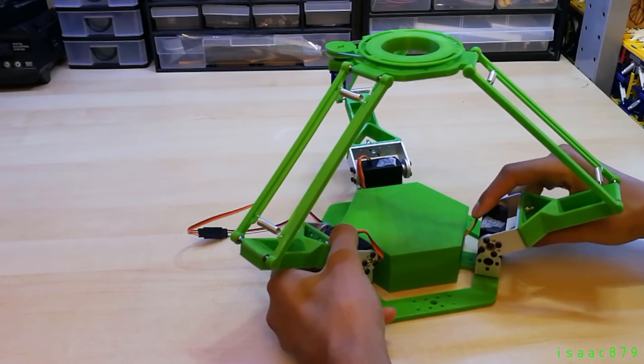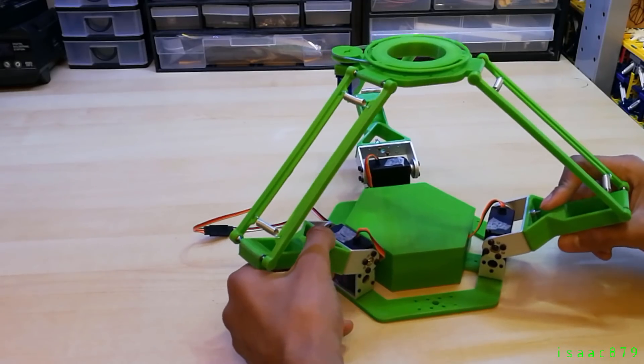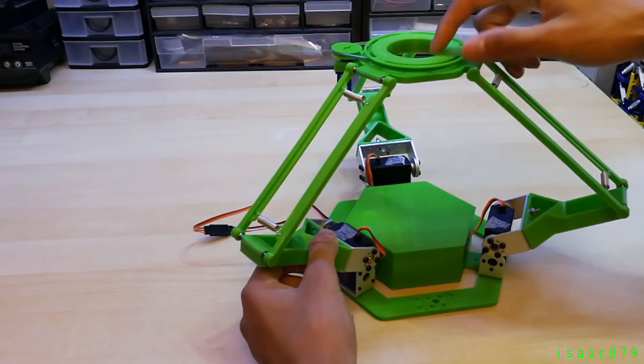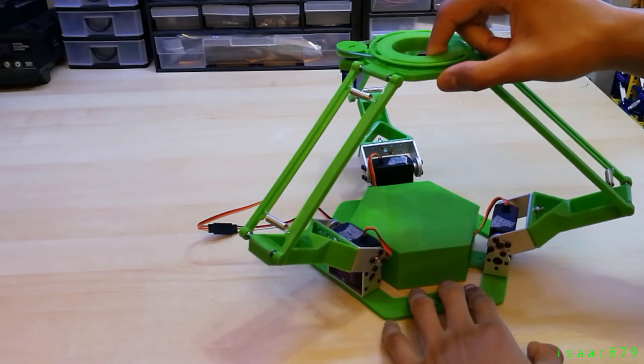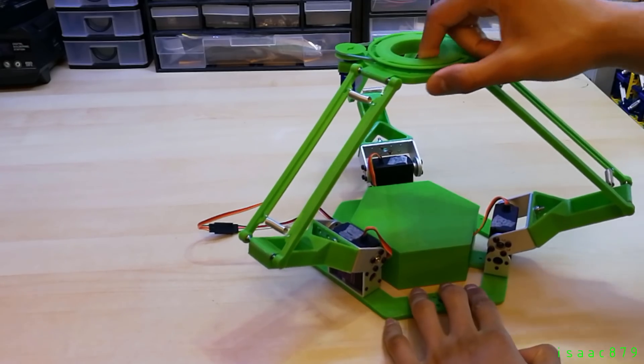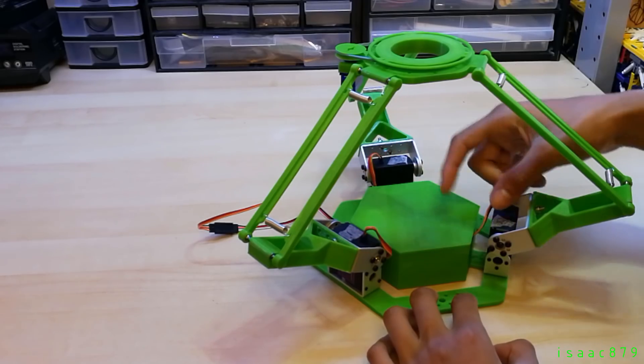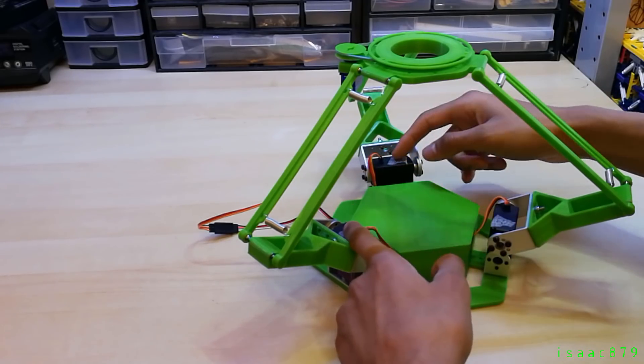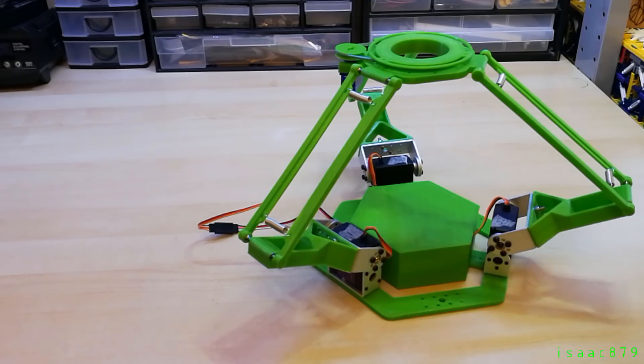Unfortunately, the way the servos are mounted isn't that rigid, which allows them to flex and move a bit, creating quite a bit of play in the end effector. So I'm going to try and fix this with a brace. It'll simply slot on top of the three servos, connecting them together, making them more rigid. I'm going to model and 3D print the brace and then we will see if it works.